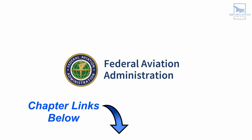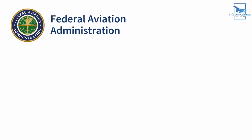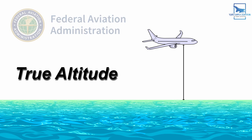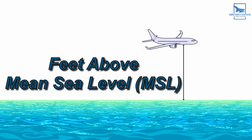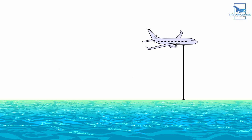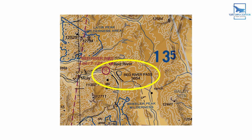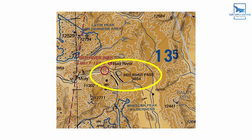The FAA defines a few measurements of altitude for us. The first one we'll look at is true altitude, which is the vertical distance of the aircraft above sea level. This is shown as feet above mean sea level or MSL, so 15,000 MSL is 15,000 feet above sea level. True altitude is also the elevation shown on aeronautical charts for things like terrain, obstacles, and airports.